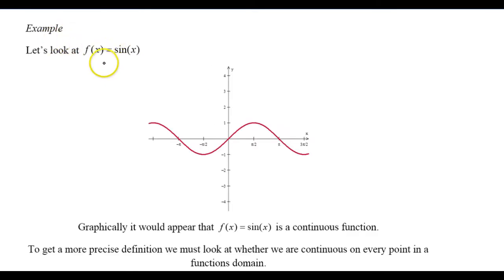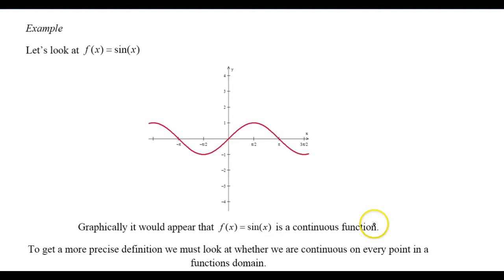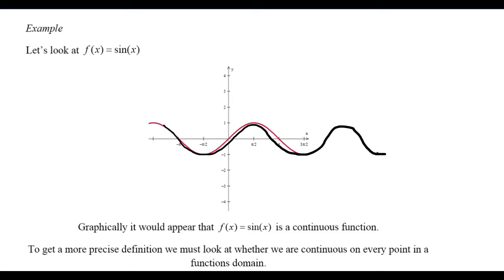Let's take a look at an example. We have f of x equals sine x. Sine x goes through the origin and has this wave pattern — it oscillates back and forth. Graphically, it would appear that sine x is a continuous function. Once we put our pen down on the paper, if we can draw the entire function without lifting our pencil, then we're continuous. This appears to be a continuous function.